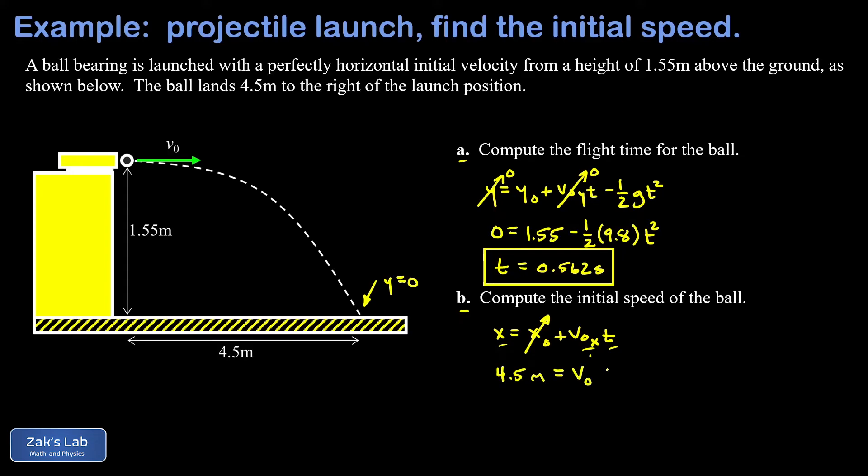Then I can say my initial X velocity, that is the muzzle velocity for the spring gun, so that's V naught. And then the flight time of 0.562 seconds, that leaves the launch speed V naught as my only unknown. And keeping three sig figs here, I get 8.01 meters per second, and we're done.